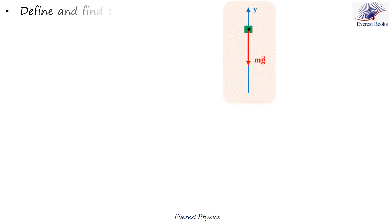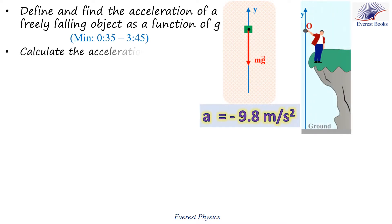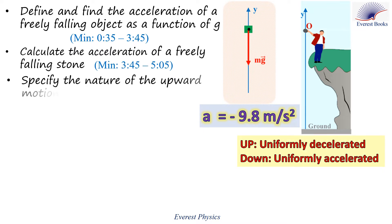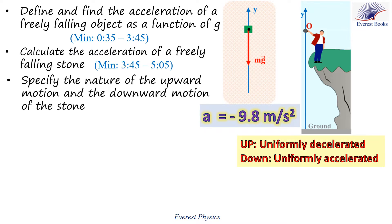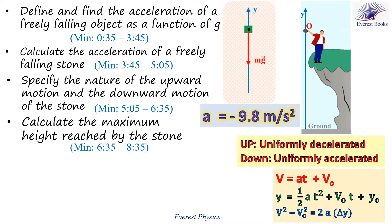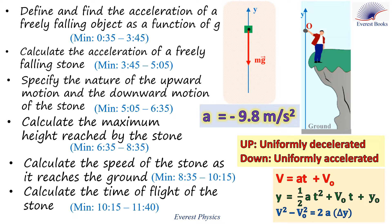Hello, this is Jeanette Androvia. Welcome to Average Physics Academy. In this video, we are going to define and find the acceleration of a freely falling object as a function of the gravitational acceleration. Calculate the acceleration of a freely falling stone. Specify the nature of the upward motion and the downward motion of the stone. Calculate the maximum height reached by the stone. Calculate the speed of the stone as it reaches the ground. Calculate the time of flight of the stone.